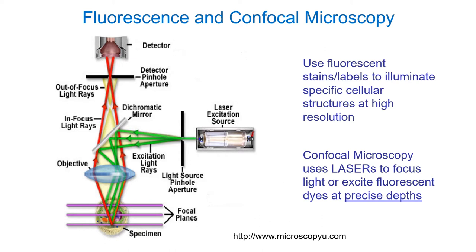We can combine fluorescence with confocal microscopy. A confocal microscope uses lasers to produce an image. Laser stands for light amplification through stimulated emission of radiation. Important properties of a laser: the color is very specific (a very specific wavelength, not a mixture), so we can excite specific dyes and not others. Also, a laser contains light rays that are almost completely parallel — not divergent — which is why you can shine a laser across a lake but can't do that with a flashlight.